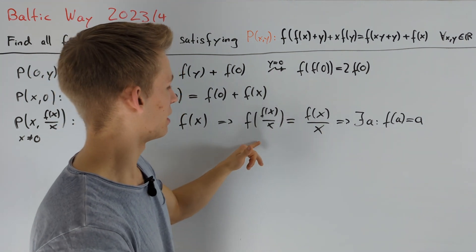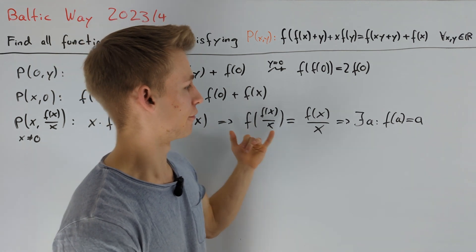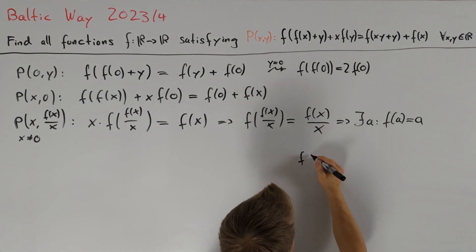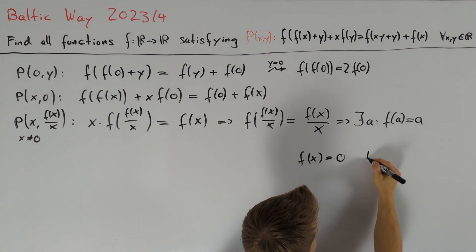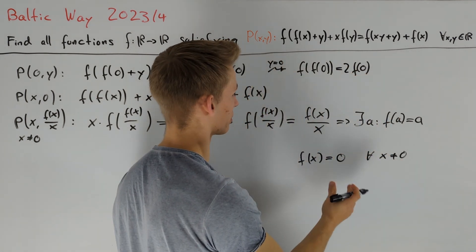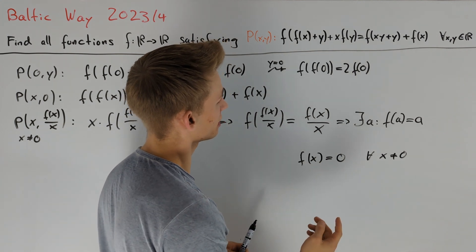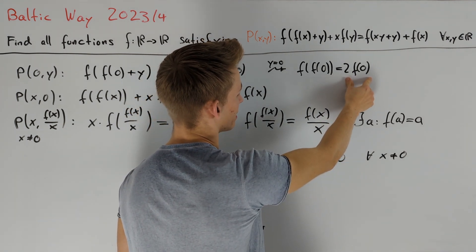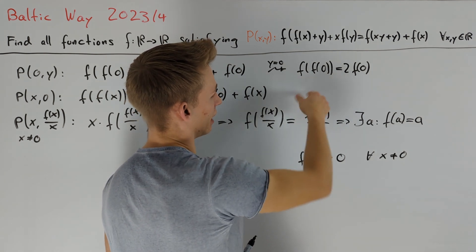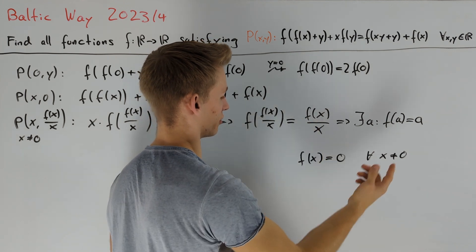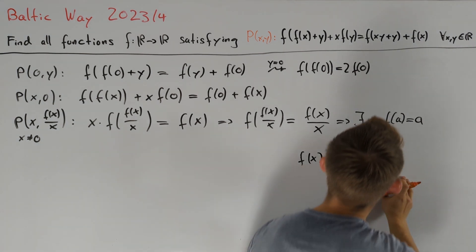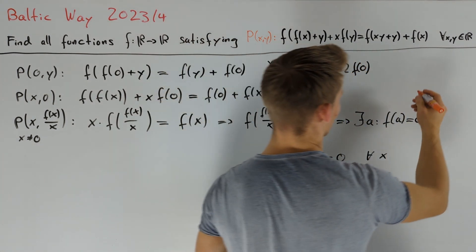If one of the values of f(x) is not equal to 0, we can find such an a not equal to 0. Therefore, the only bad case is that f(x) = 0 for all x ≠ 0. In this case, f(0) is also equal to 0, because otherwise we'd have a non-zero value on the right-hand side but f of something non-zero on the left, giving 0 — a contradiction. So f(x) = 0 for all x, and this is indeed a solution.